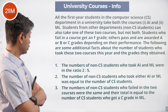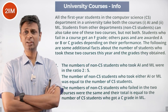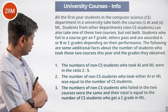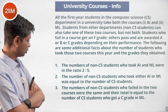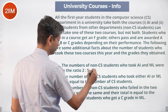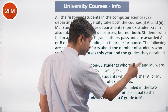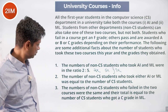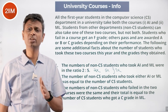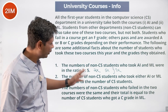The number of non-CS students who took AI and ML was in the ratio 2:5. The number of non-CS students who took either AI or ML was equal to the number of CS students. So if we call these 2x and 5x, the total is 7x. So all 7x CS students have taken AI and all 7x have taken ML, with 2x non-CS in AI and 5x non-CS in ML.